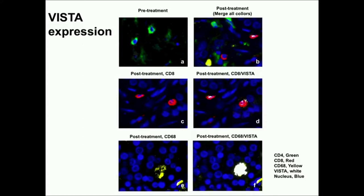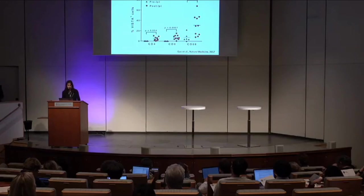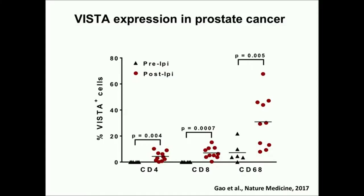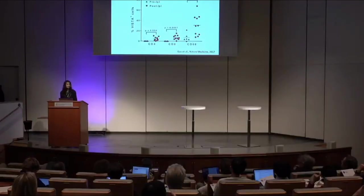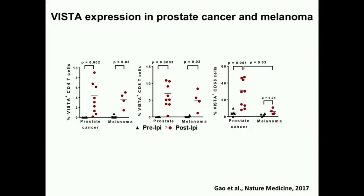We could look at T cells and macrophages and co-localization of how VISTA protein is expressed. In the pre-treatment samples versus the post-treatment samples, you can see increased VISTA expression on these macrophages — the CD68 cells — with some on T cells as well. In prostate cancer, we're very interested in this because prostate cancer does not respond as well to immunotherapy as melanoma. We did a comparison between prostate cancer and melanoma samples treated with anti-CTLA4, and this was definitely something different in the prostate cancer patients compared to melanoma.